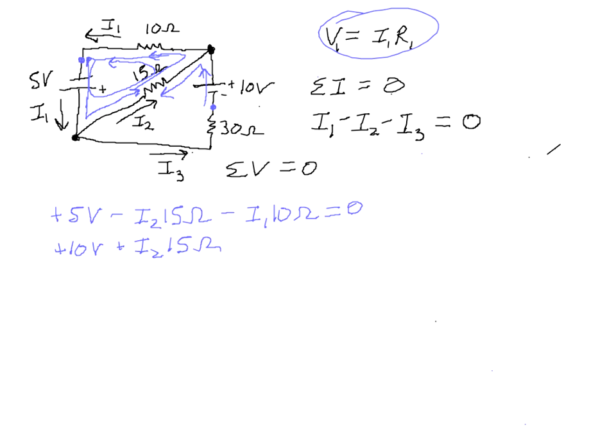Now we're going to keep going here. We're going to go over the 30 ohm resistor in the direction of current I3. So that's a voltage drop minus I3 times 30 ohms, and that's equal to zero.